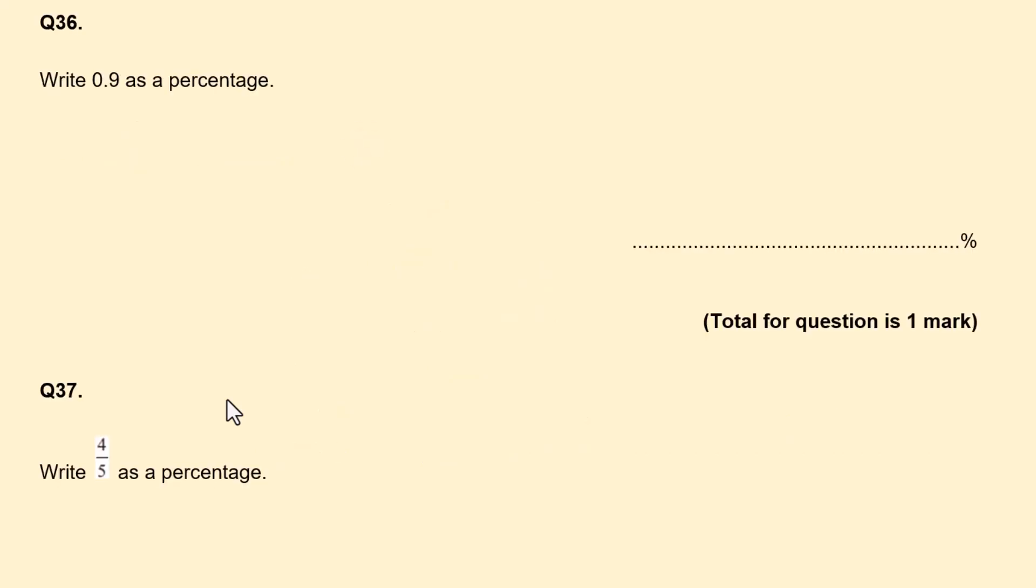Next, 0.9 as a percentage. 9 divided by 10 gives us a fraction. So it times by 10 and 10, 90 out of 100, which is 90%. Now some of you might already know that 0.9 is 90%. Just go ahead and write your answer and it's worth one mark. But it's always good to understand how you get the answer.